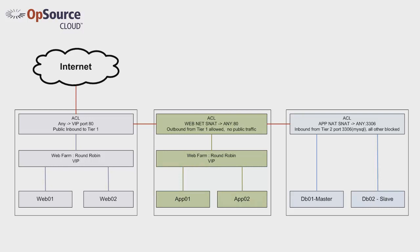Our application is a zip code lookup tool which has been previously developed and added to our custom server images that we will use in the creation of our cloud application. The web tier servers will make a RESTful XML request to the application tier, which in turn makes SQL requests to the database servers, and then display the results in the client browser. For this demonstration, we wrote a simple PHP-based app for the web and application tiers. Our database servers are running the popular MySQL server.